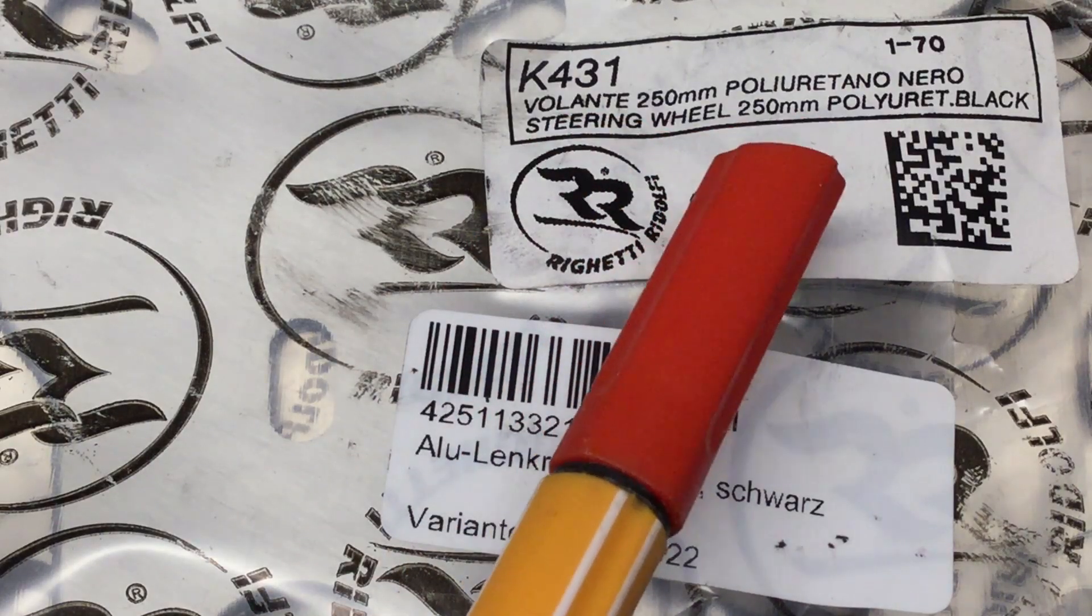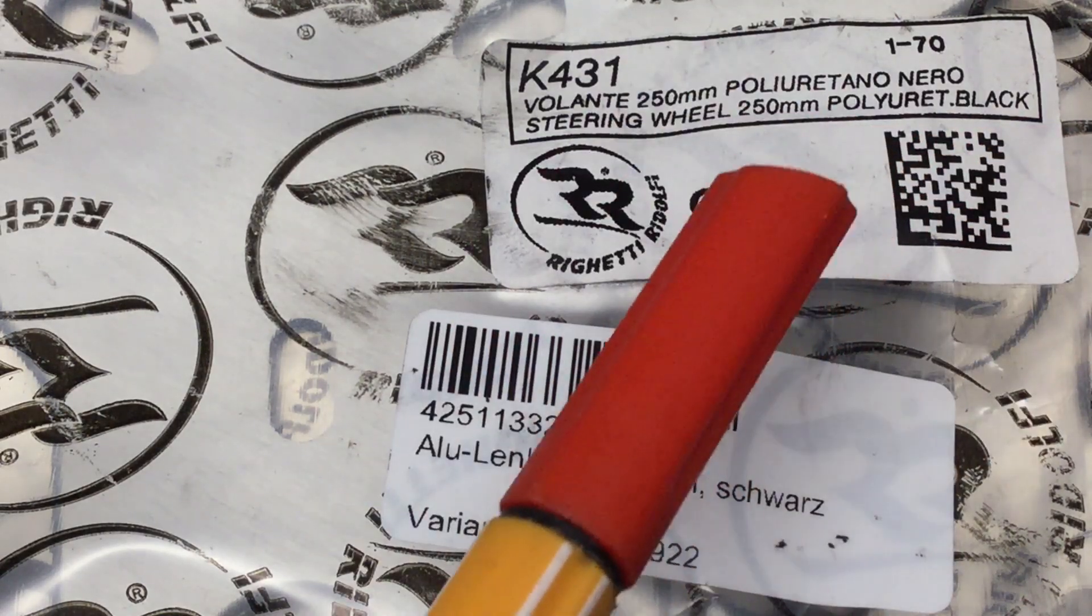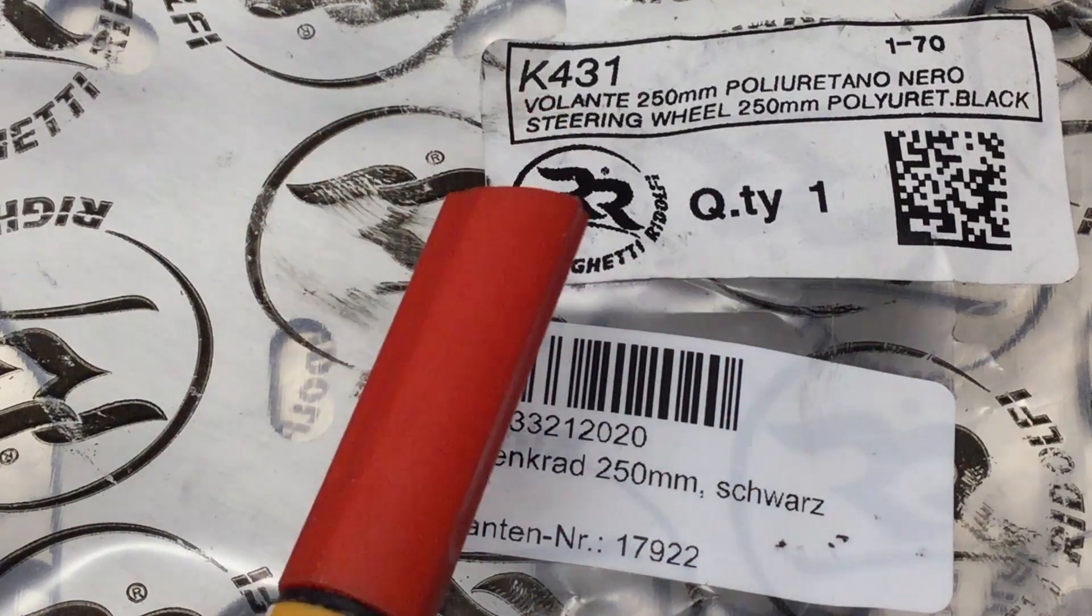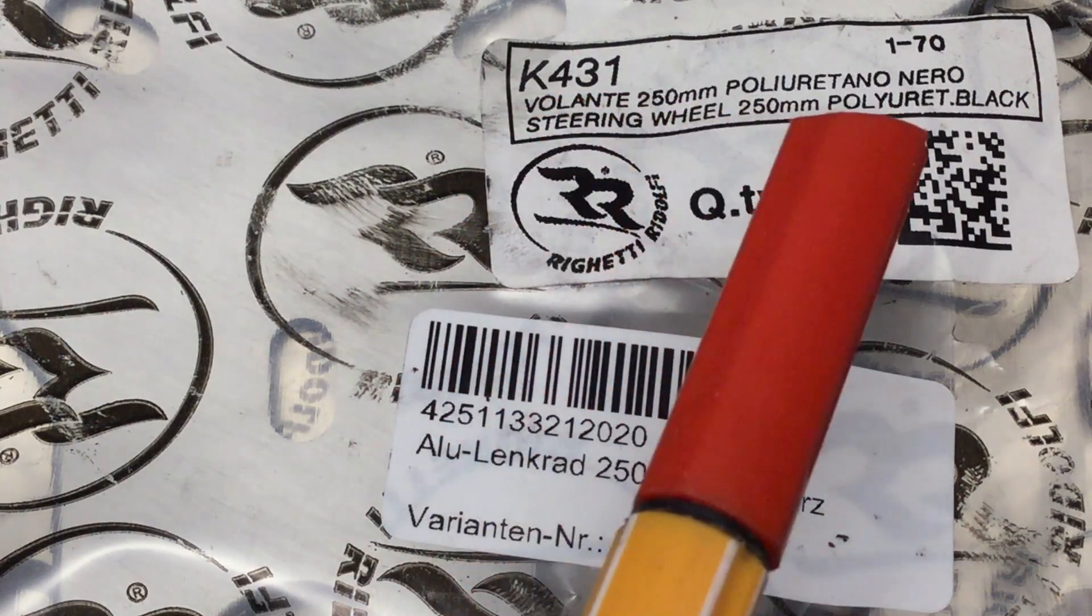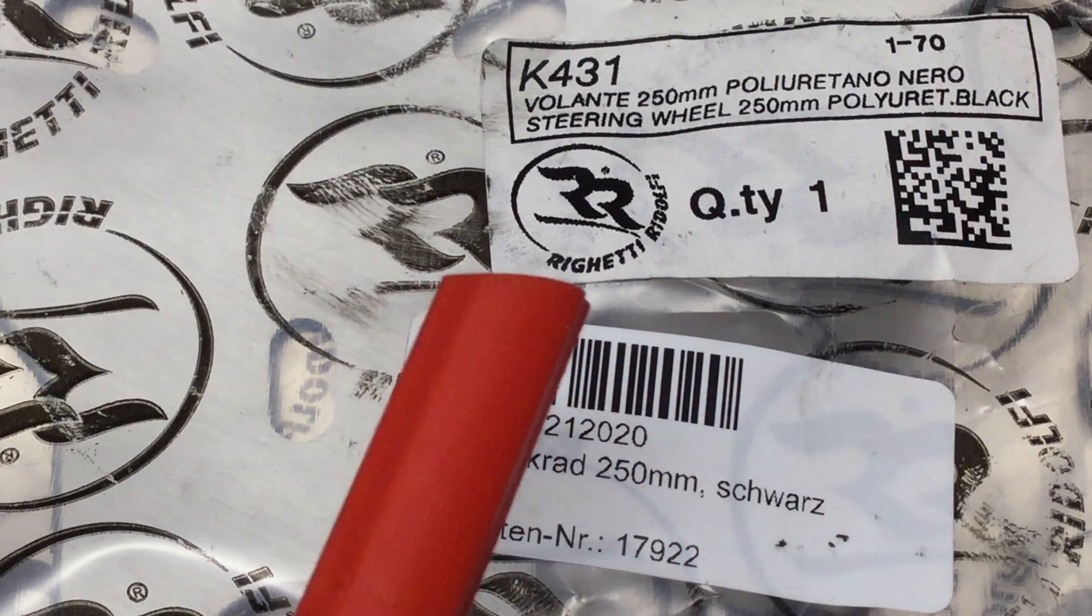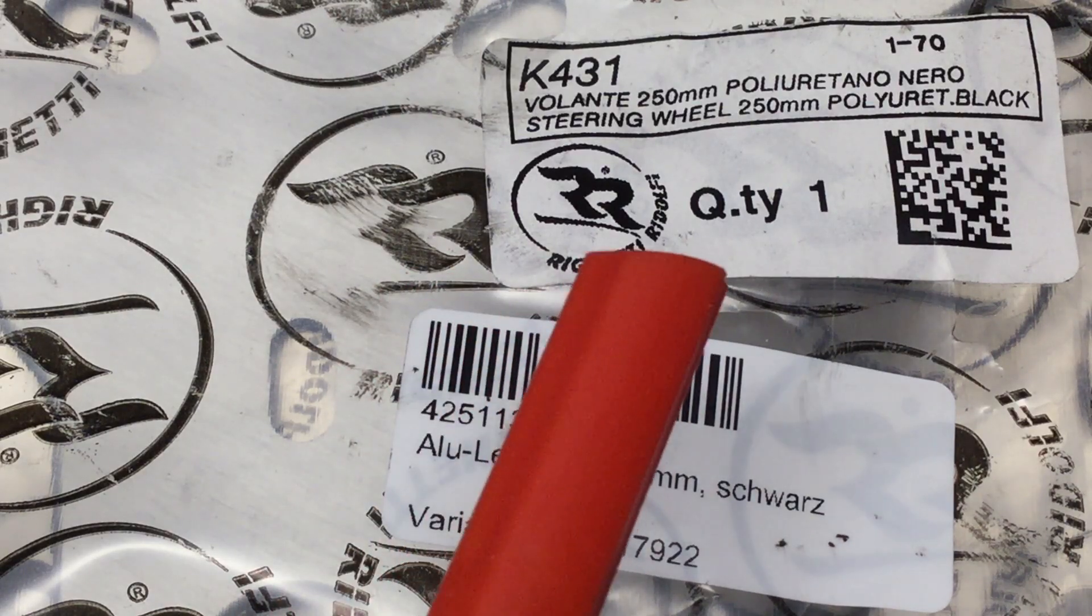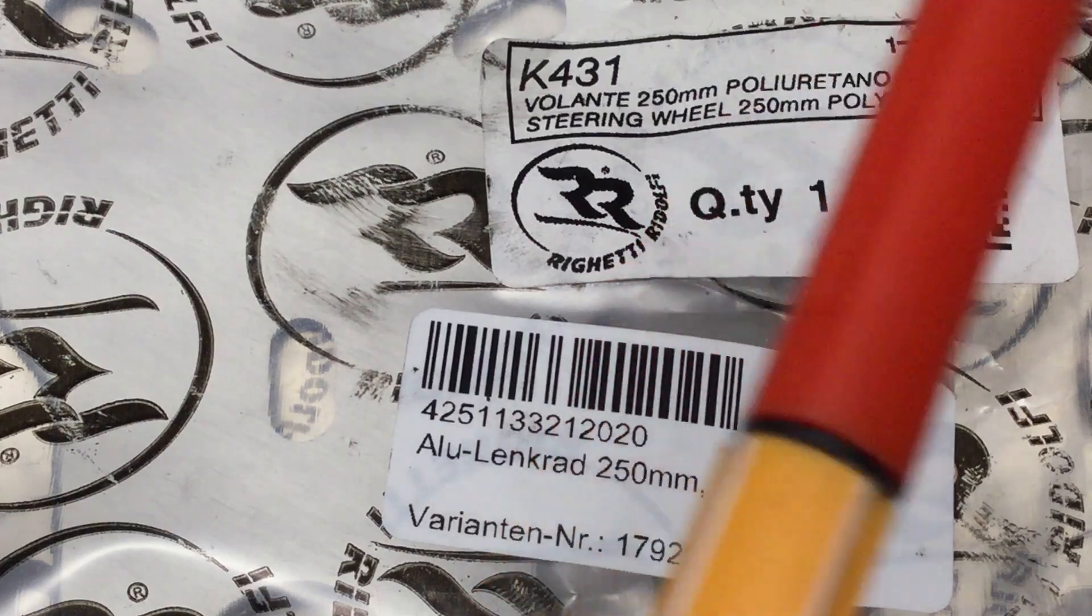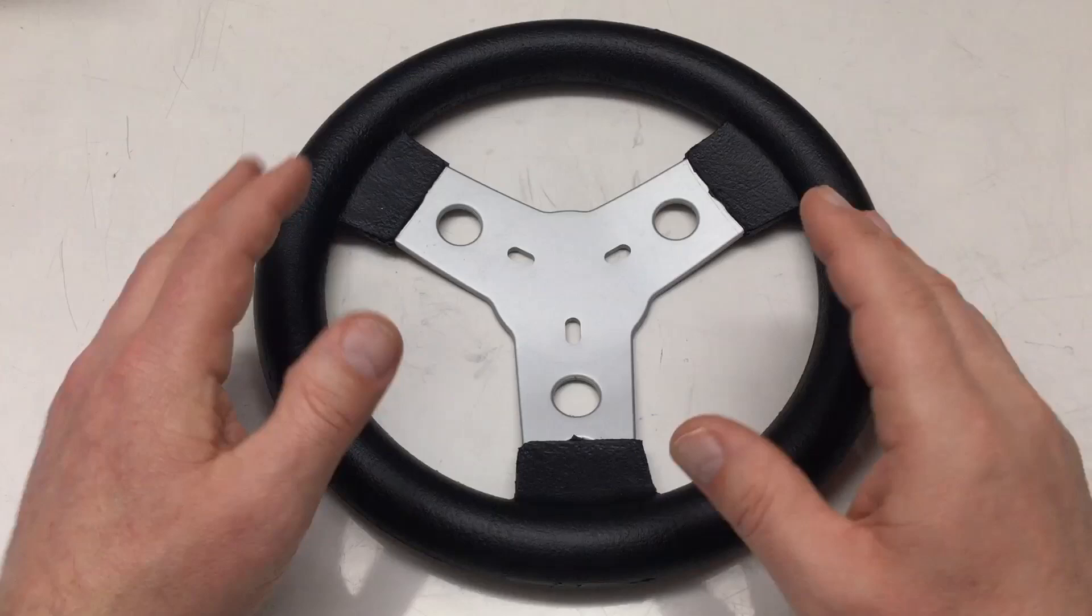250 millimeter diameter and polyurethane black. Yeah, where you grab it actually. Or in Italian, Volante 250 millimeter polyurethane nero. And it's for Nomo company, Italian company obviously, the Getti Ridolfi, not Rudolfi but Ridolfi.